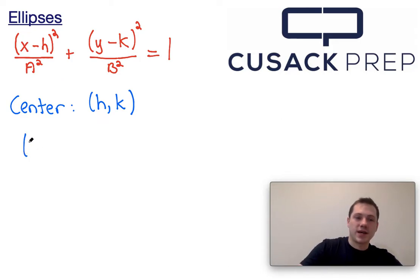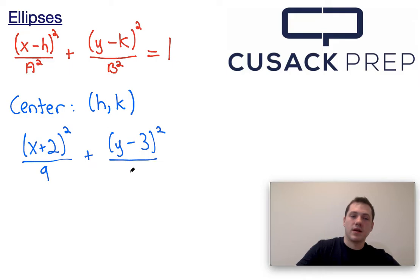So the example that I'm going to provide you with is x plus 2 squared over 9 plus y minus 3 squared over 16 is equal to 1. So we've already mentioned that the center is going to be h comma k.